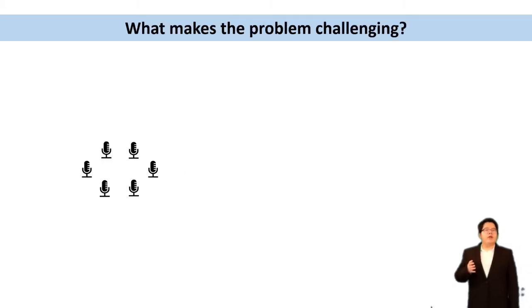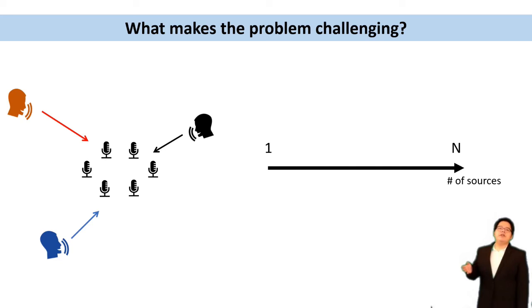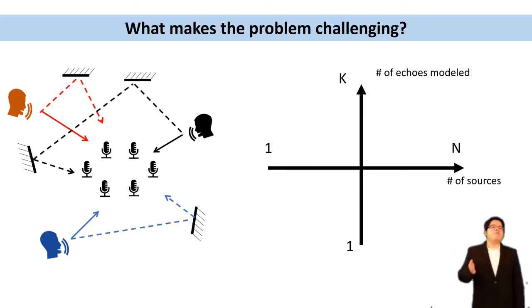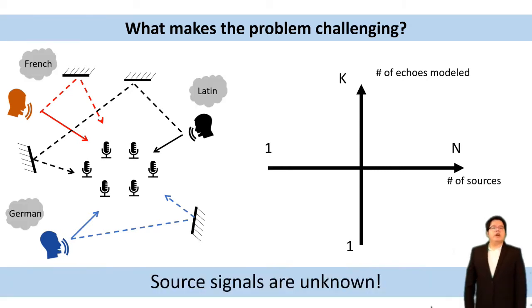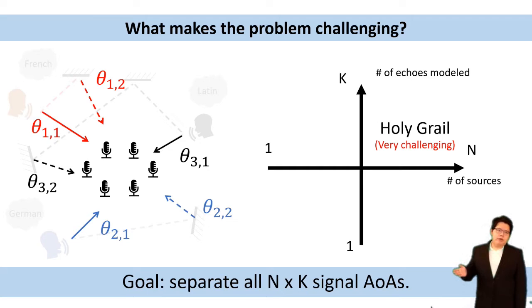Let's first see what makes AOA so challenging. We have a microphone array as the receiver, and we might have different number of sources, either a single source or N larger than one source, and each of them might produce one or K more than one echo. Moreover, the source signals are unknown, and the goal is to separate the received signal and estimate all N times K signal AOAs.